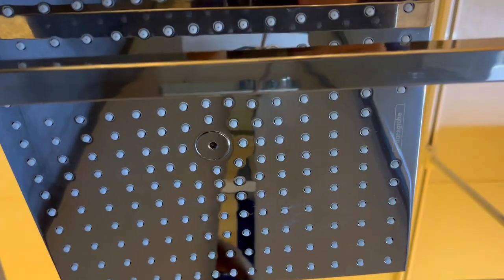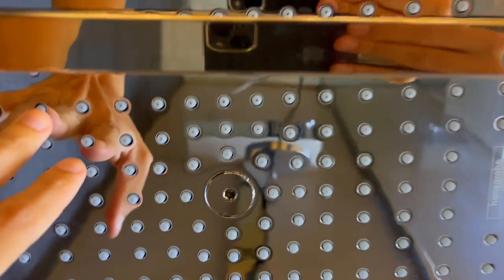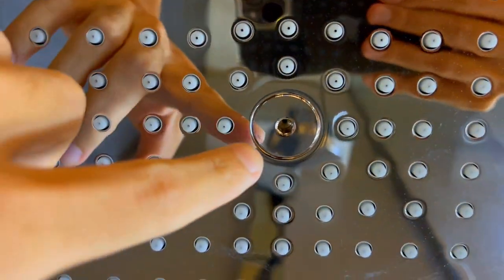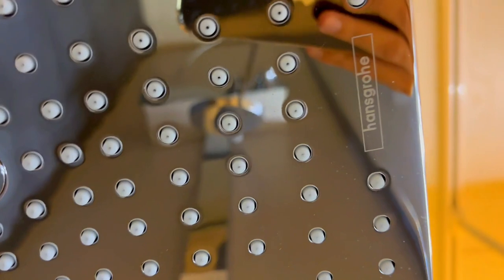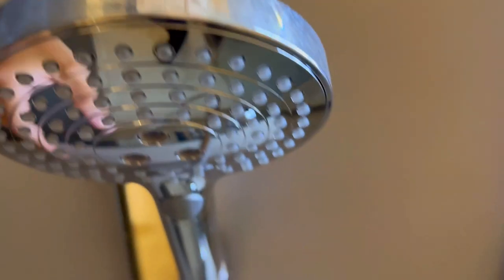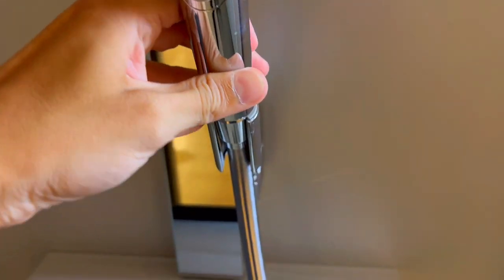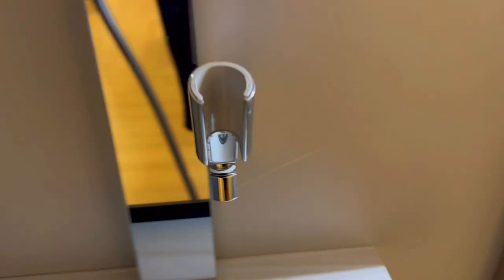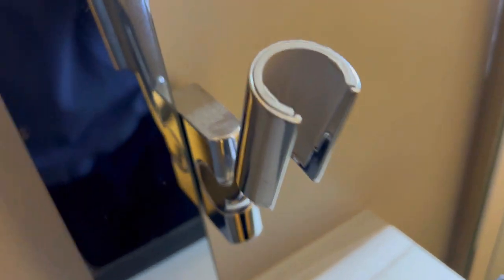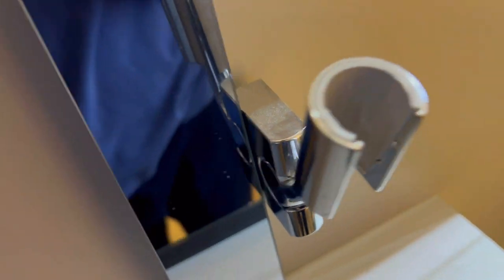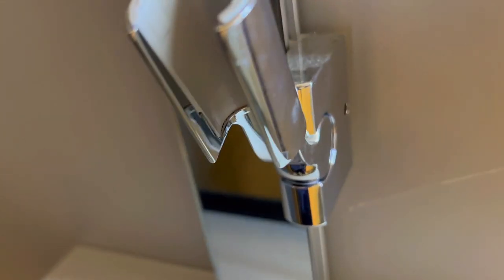First off, are you tired of those underwhelming showers that feel like a light drizzle on a summer day? Enter the Grohe Chrome Shower Set. The 300x300mm shower head turns your shower into a rainfall paradise, while the hand shower with rain air jet type feels like a gentle rain shower. Finally, a shower that feels like a true escape.